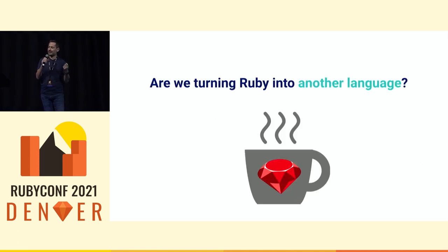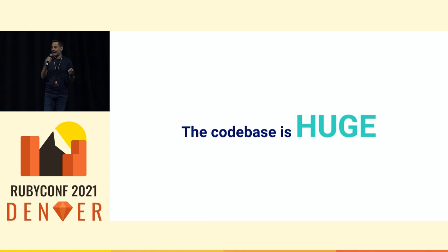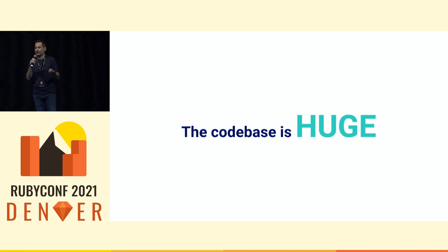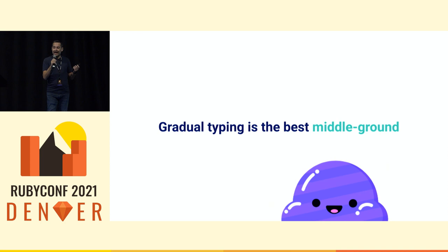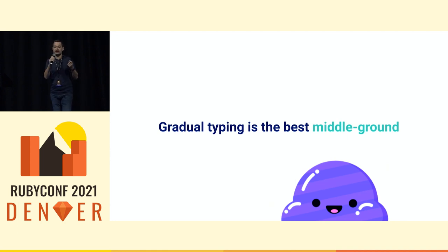But we also don't want to turn Ruby into another language — something like a coffee-flavored language. At the same time, our code bases are huge. At Shopify we have over 40,000 Ruby files in our core monolith. If we wanted to do static typing, it would mean we'd have to add types to all of our files, or even rewrite our code base in a different language. But we don't want to — we love Ruby. So gradual typing is the best middle ground. You don't have to go full in on types from the get-go; you can adjust the level of adoption as little or as much as you want.